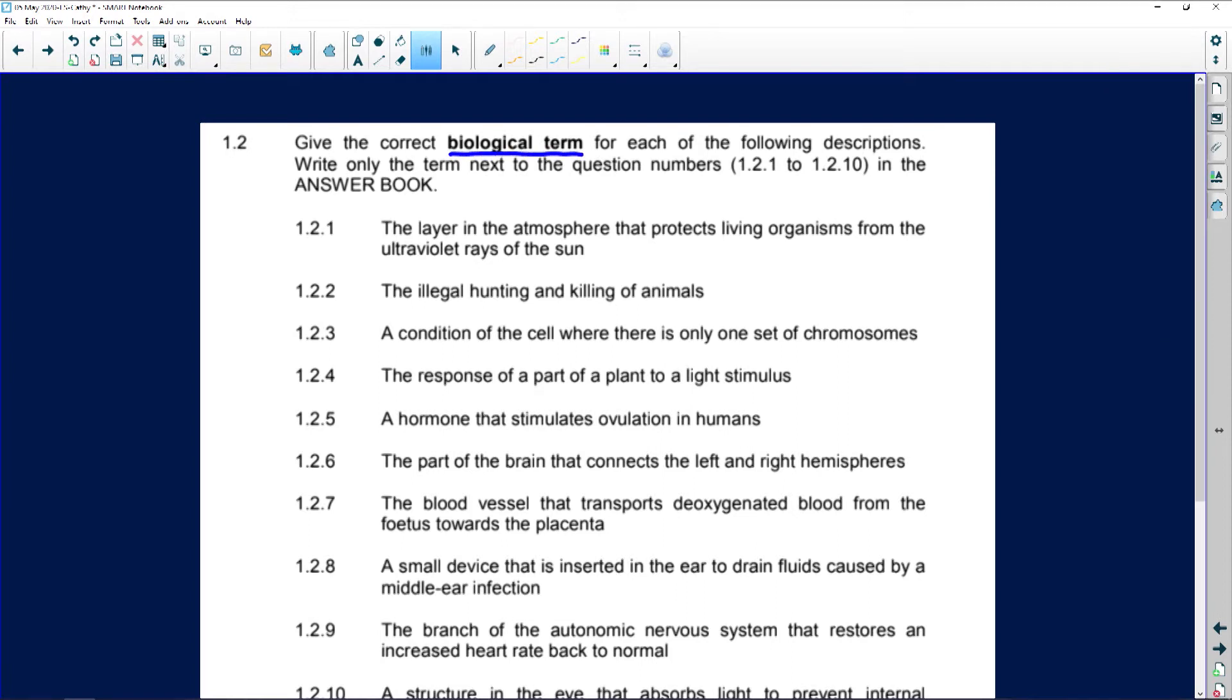Now, the layer in the atmosphere that protects living organisms from ultraviolet rays of the sun is the ozone. You would have learnt about this in grade 2 or 3 already. So it's the ozone. And where there is a hole in the ozone is what causes issues. So the ozone protects us.